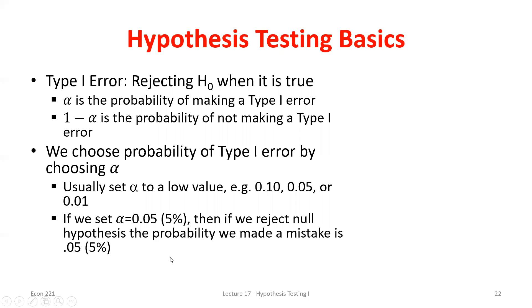Alpha of 0.05 is the 5% significance level, meaning we're rejecting the null when we shouldn't have 5% of the time, and we won't make a Type 1 error 95% of the time. Regarding a student question: just like with confidence intervals where you choose 90% or 99% confidence, here you choose whether to test at 1%, 5%, or 10% significance level. Each alpha value essentially requires its own hypothesis test, just as each confidence level requires its own confidence interval.